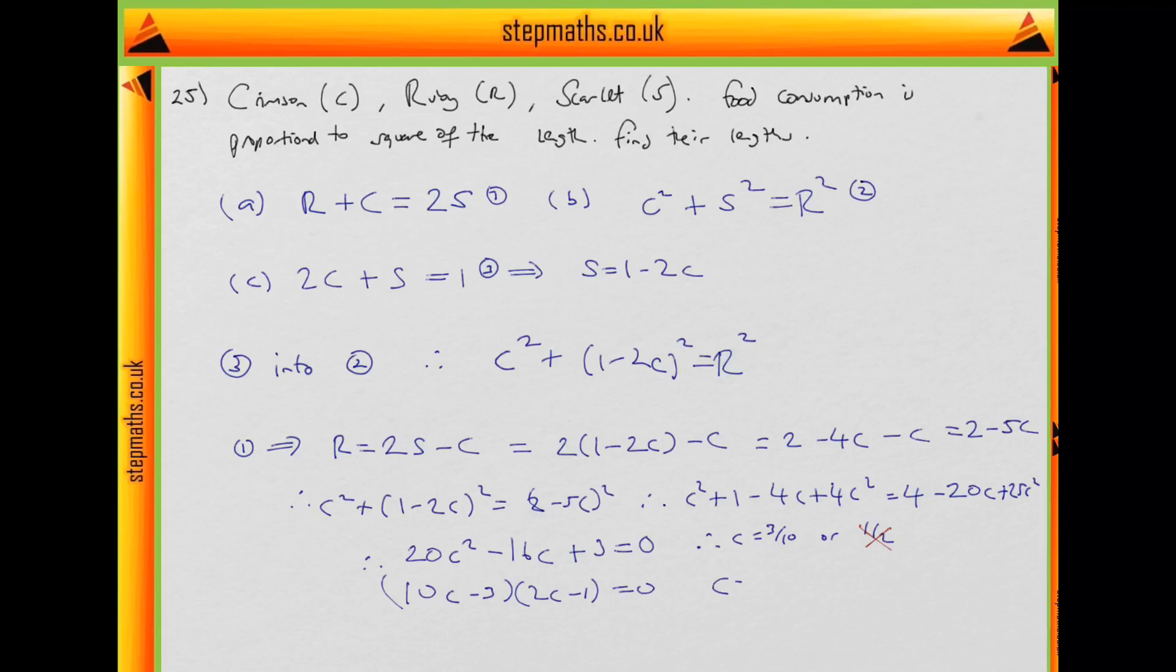So that means C is in fact 0.3 metres, which tells us from here, that R is 2 minus 5 times 0.3, 2 minus 1.5, which is 0.5 metres. And then our scarlet, well scarlet is 1 minus 2C, so that's 1 minus 0.6, so that's 0.4 metres. And those are the lengths. Let's go.